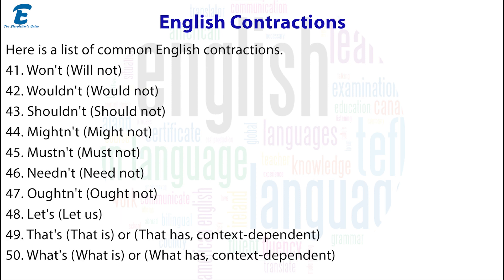39. Can't = cannot. 40. Couldn't = could not. 41. Won't = will not. 42. Wouldn't = would not. 43. Shouldn't = should not. 44. Mightn't = might not. 45. Mustn't = must not. 46. Needn't = need not. 47. Oughtn't = ought not. 48. Let's = let us. 49. That's = that is or that has (context dependent).